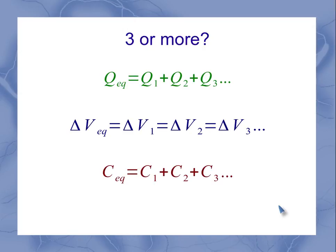What if we have three or more capacitors in a parallel circuit? The charges still add up, now adding all three. The voltages are still the same, no matter how many we have. And the equivalent capacitance adds up all the individual capacitances.